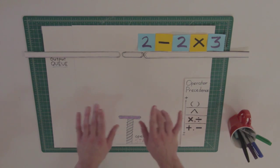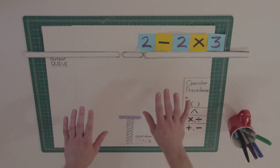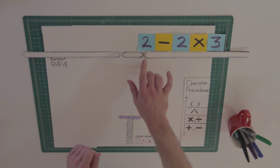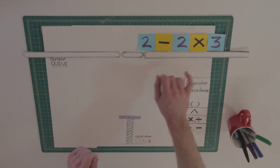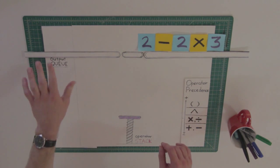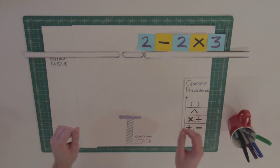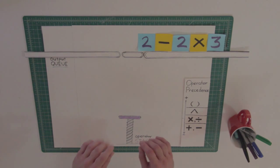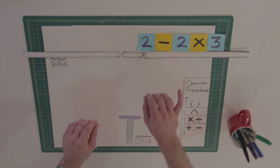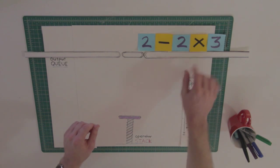This is our visual representation of the shunting yard algorithm. We'll see how this infix expression will be converted to POSIX notation, also known as reverse POSIX notation. First, while there are input tokens, read the next token from the input — these are all tokens.